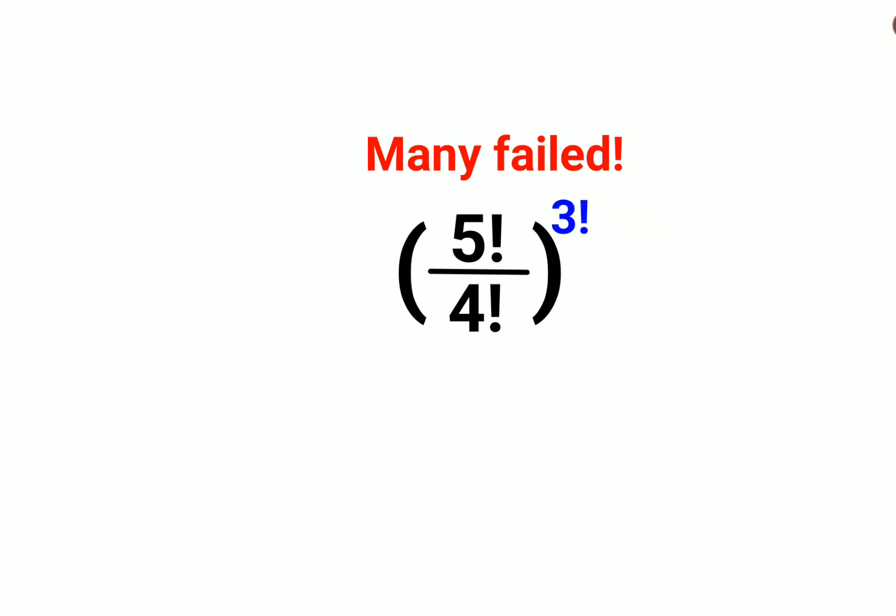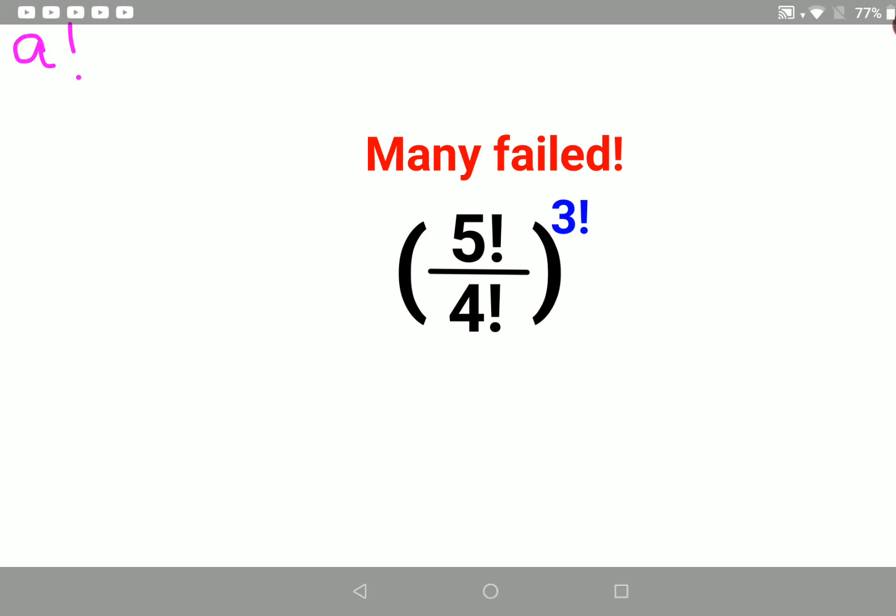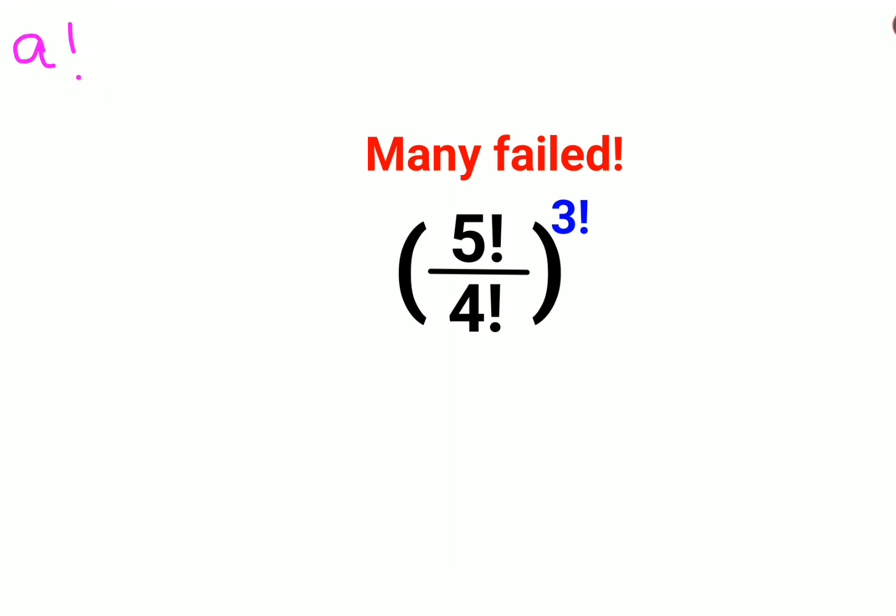Now, please understand whenever you have a factorial or an exclamation sign after a number, you can represent the entire factorial as multiplying that number in decreasing order until you reach the value of 1.